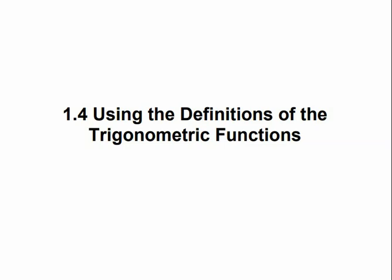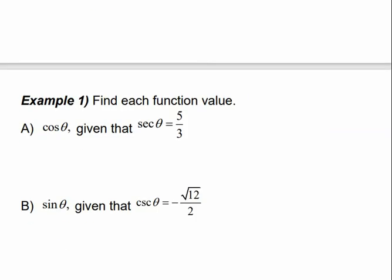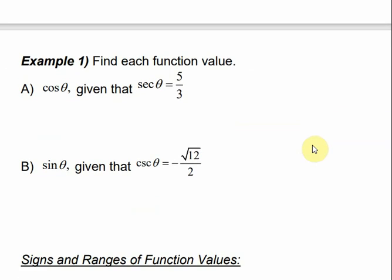Using the definitions of the trigonometric functions, we're going to find each function value. For this first one, it says cosine of theta, where they want us to find cosine of theta given that the secant of theta is 5 over 3. The relationship between cosine and secant is that they are reciprocal functions, so all we have to do to find cosine of theta is take the reciprocal of secant, and that gives us 3 over 5.